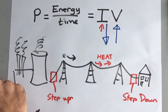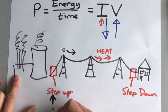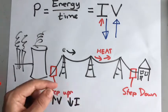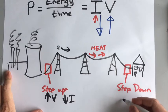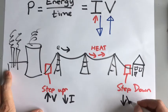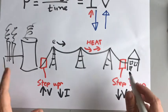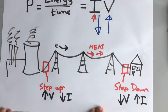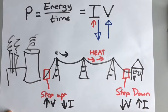The step-up transformer increases the voltage and so decreases the current. The step-down transformer transfers it back again — the voltage goes down and the current goes up — so it goes back to a usable amount of current. Now let's look a little bit closer at what these things actually do and how they work.